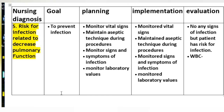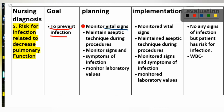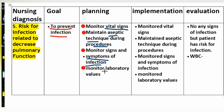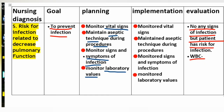Nursing diagnosis 5: Risk for infection related to decreased pulmonary function. Goal: To prevent infection. Planning: Monitor vital signs, maintain safety techniques during procedures, monitor signs and symptoms of infection, and monitor laboratory values. Evaluation: No signs of active infection, but patient has risk for infection; WBC count to be monitored.